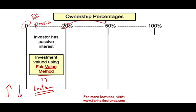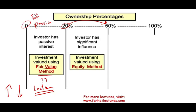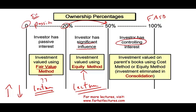If you own between 20% and 50%, you are now a serious investor considered to have significant influence, in the absence of any other evidence. Under significant influence, we're going to be using the equity method — and we'll have a whole lecture about that. If you own more than 50%, for FASB purposes you are assumed to have control. Owning more than 50% means you control voting rights, you can choose the board of directors, and you control the company. Under those circumstances, the investment is valued on the parent's books using either the cost method or the equity method, and the investment account is eliminated in consolidation — which is its own course: advanced accounting.